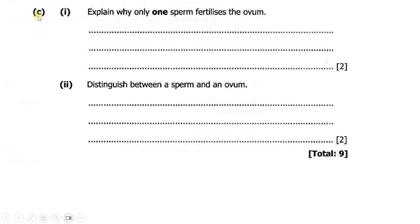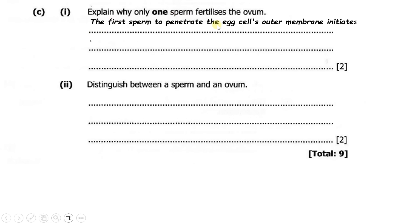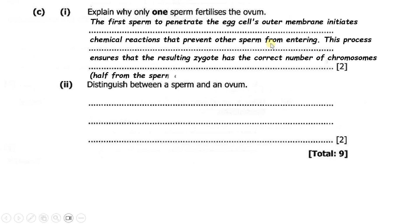Then C, part 1 says: explain why only one sperm fertilizes the ovum. The answer is that the first sperm to penetrate the egg initiates chemical reactions that prevent other sperm from entering. This process ensures that the resulting zygote has the correct number of chromosomes — half from the sperm and half from the egg.